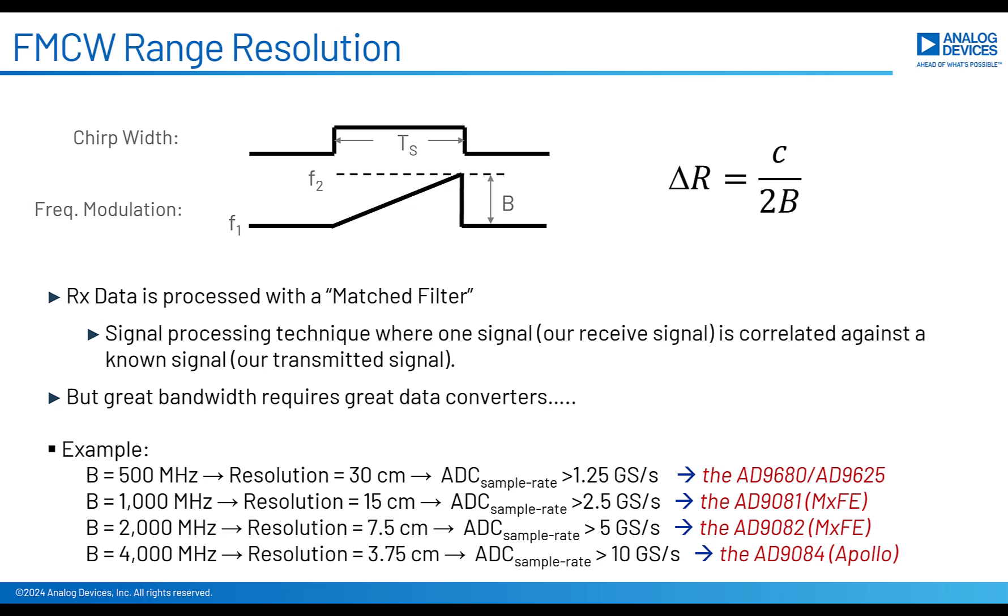These waveforms are generally digitally created and digitally received. Then we compare the transmit to the receive using a matched filter, and that gives us the beat frequency. So this means that the higher the bandwidth, the higher the sample rate that we need on the ADCs and DACs. I put some examples on this slide. So at a one gigahertz sample rate, we're at about a 15 centimeter range resolution. And that's probably something like the AD9081 or AD9082 from analog devices. But if you needed something smaller than that, then you're in some variant of the new AD9084. So FMCW provides us with a method to get great range resolution and for reasonable power and without having to worry about pulse length. But it does require higher data rate converters.